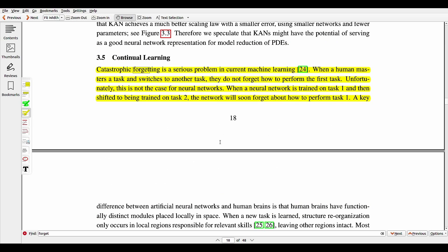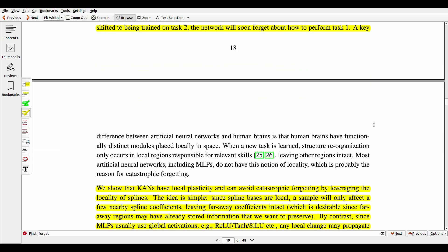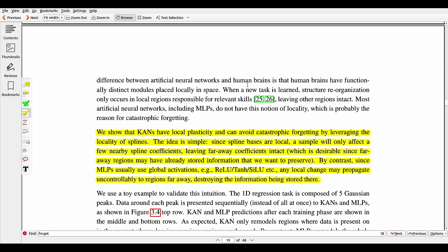Talking more on these, because catastrophic forgetting is such a topic of focus in the industry for acceptability of large language models. Catastrophic forgetting is a serious problem in current machine learning. When a human masters a task and switches to another task, they do not forget how to perform the first task. Unfortunately, this is not the case for neural networks. When a neural network is trained on task one and then shifted to another task two, the network will soon forget about how to perform task one.